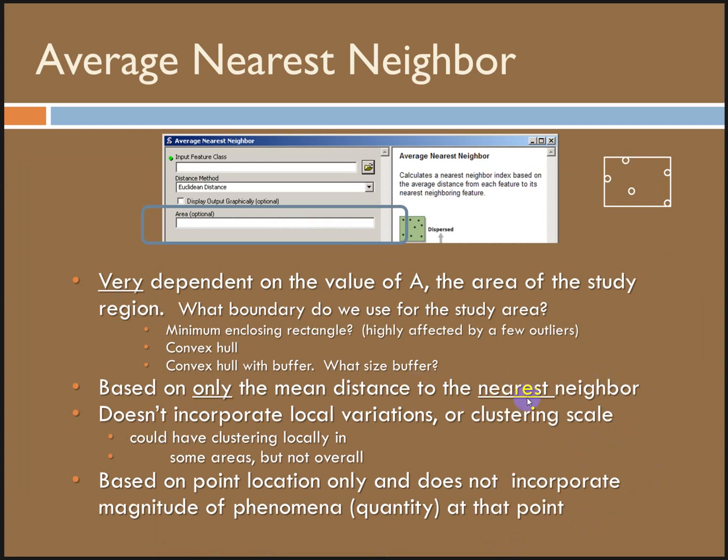Average nearest neighbor has one limitation. It's very dependent on the size of the processing area. ArcGIS does give you the option to insert your own area value. You would just want this to be in the same units as your coordinate system of the data that you're working in, and bigger than a rectangle defined by the maximum extent. The default value that ArcGIS is going to use is the minimum enclosed rectangle that encompasses all the features. It's kind of like the convex hull, but instead of creating a regular polygon shape, it just does a rectangle defined by the min and max x and y coordinates of the data.